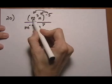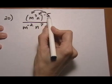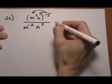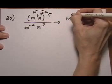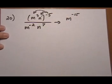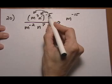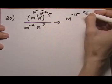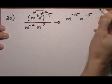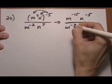This first one, m cubed, is being raised to the minus fifth. Power to power, multiply the exponents. So that becomes m to the minus fifteen. And then n is to the one power. Even though it doesn't show a one, the one is there. So I have power to power, multiply, so n to the minus five. And the other two guys on the denominator just tag along.